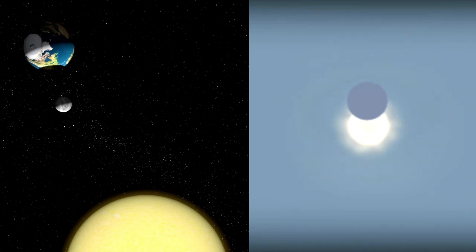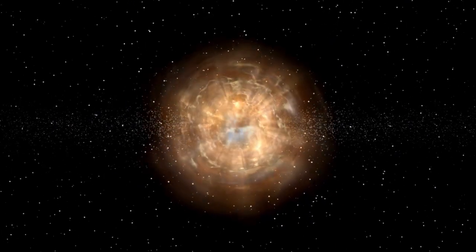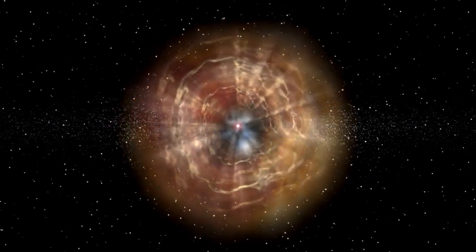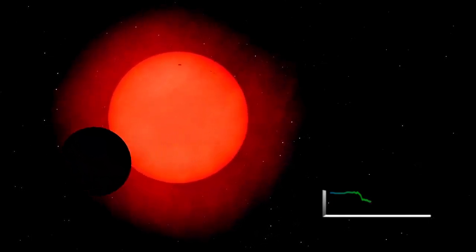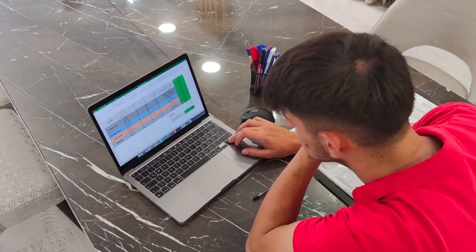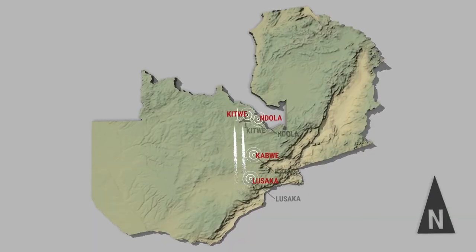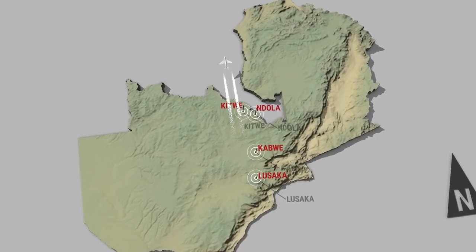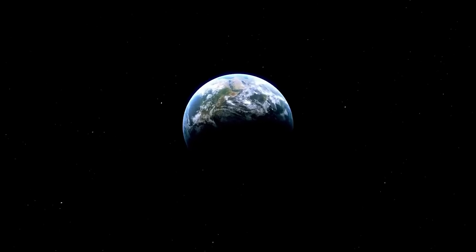Massive stars like Betelgeuse are complex laboratories of nuclear fusion, where the elements essential to life are created. The sudden brightening may indicate that fusion of heavier elements is intensifying, pushing the star toward its inevitable end. When fusion can no longer produce enough energy to counteract the force of gravity, the star collapses, leading to a dramatic explosion. If Betelgeuse is approaching this point, we may be witnessing some of the final warning signs.